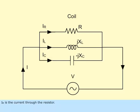I sub R is the current through the resistor. I sub L is the current through the inductor. I sub C is the current through the capacitor.